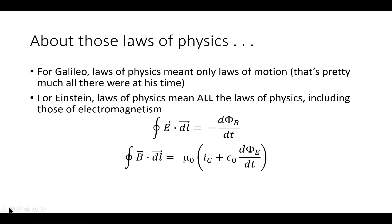For Galileo, the laws of physics only meant laws of motion — pretty much all there were at the time. The primary one was what became Newton's first law of motion: an object at rest will remain at rest unless acted on by an unbalanced outside force, or an object in motion will continue at constant speed and direction unless acted on by an unbalanced outside force.